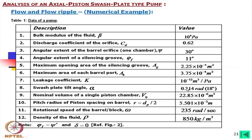The leakage coefficient k is taken as constant for this pump regardless of stroke length. The pitch radius is 5.501×10⁻² m (about 5.5 cm diameter). The number of pistons analyzed is 7, 8, and 9, though the basic data corresponds to a 7-piston machine. The rotational speed used in one calculation is 238 rad/s (approximately 1500 rpm), and the fluid density is 850 kg/m³.